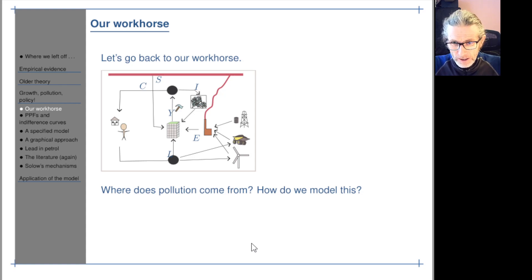Unlike Brock and Taylor and Stokey and Andrione and Levinson, we're going to start by asking ourselves where does pollution actually come from? For the most part it comes from the use of natural resources, things like burning coal, burning oil, etc.